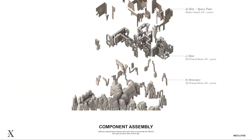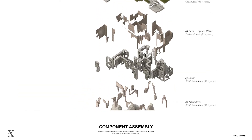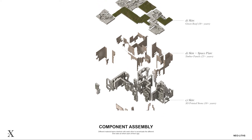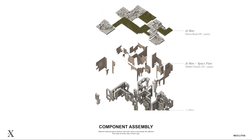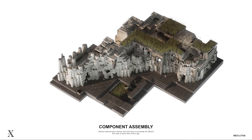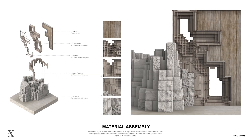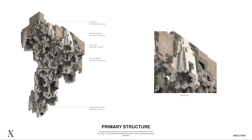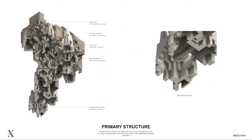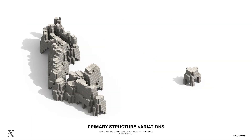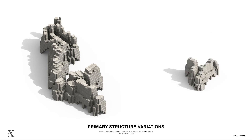In order to promote interconnectedness with the environment, Stuart Brand's Shearing Layers serve as a guide to segregate different building components according to their longevity and function. All of these layers connect into an assemblage of different materials, making possible future assemblies and disassemblies congruent with their life spans. The structure is hollowed out, utilizing the same color information from the machine learning output, providing accessibility and space while retaining its structural capacities.